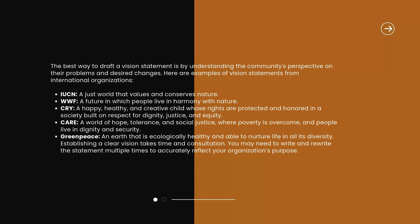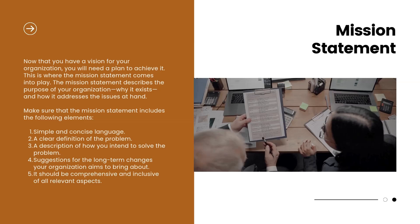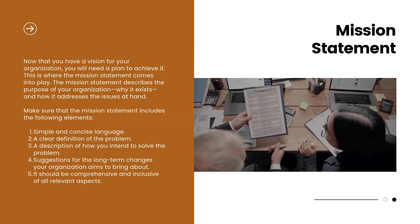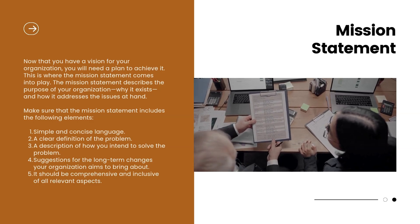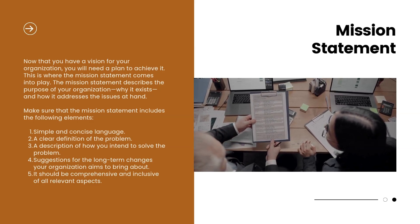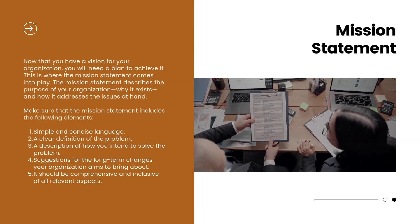Establishing a clear vision takes time and consultation. You may need to write and rewrite the statement multiple times to accurately reflect your organization's purpose. Mission Statement: Now that you have a vision for your organization, you will need a plan to achieve it. This is where the mission statement comes into play. The mission statement describes the purpose of your organization, why it exists, and how it addresses the issues at hand.